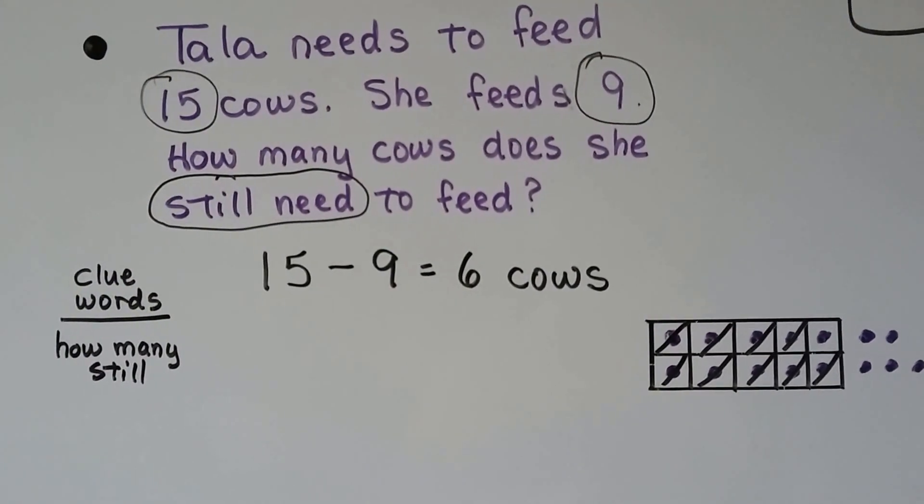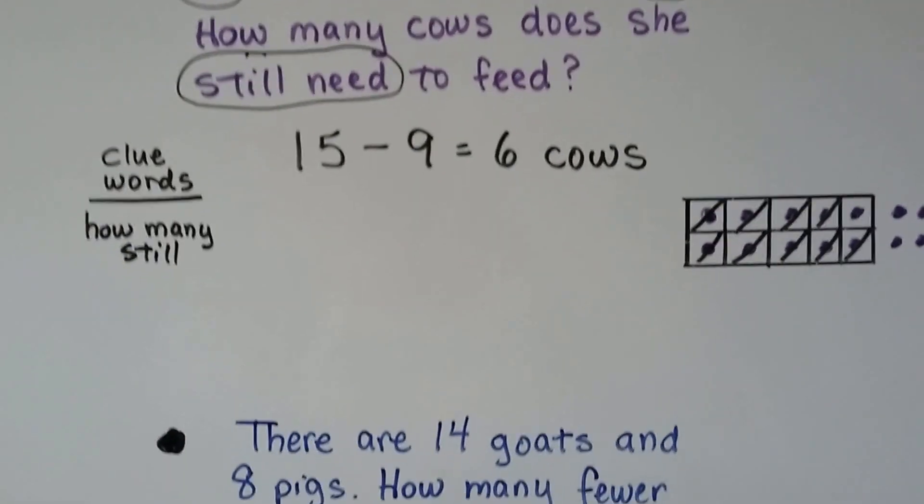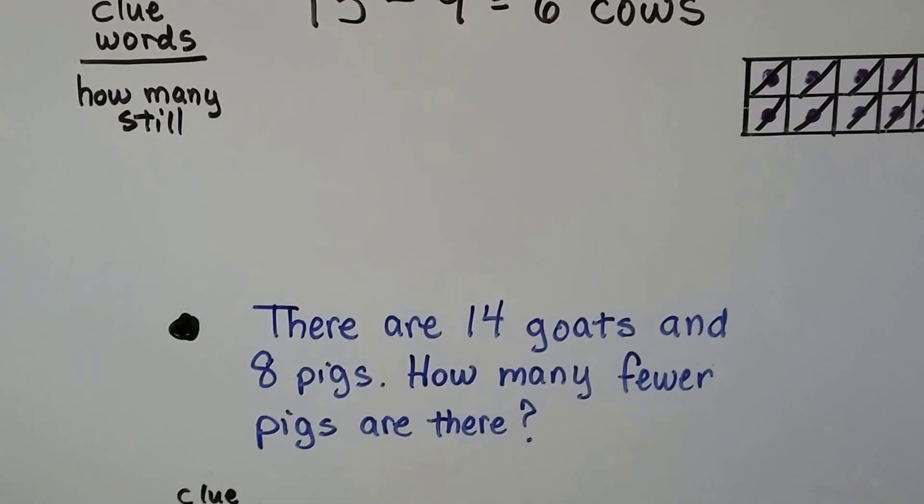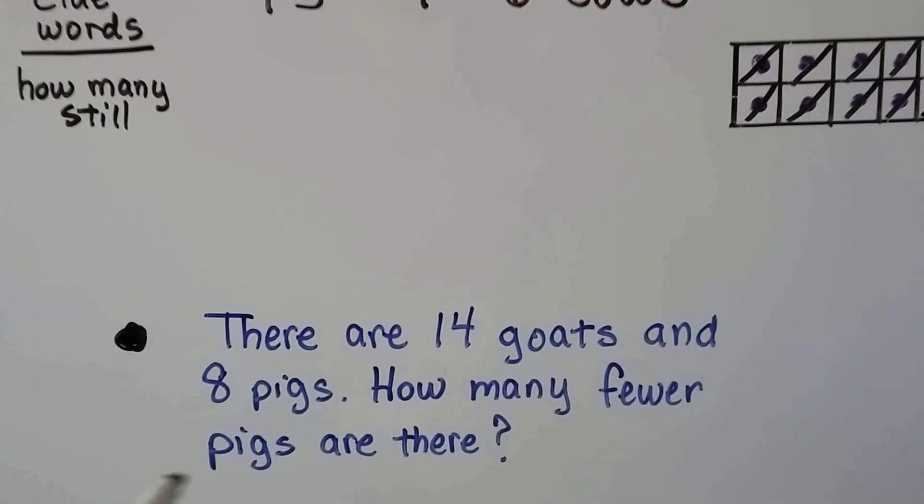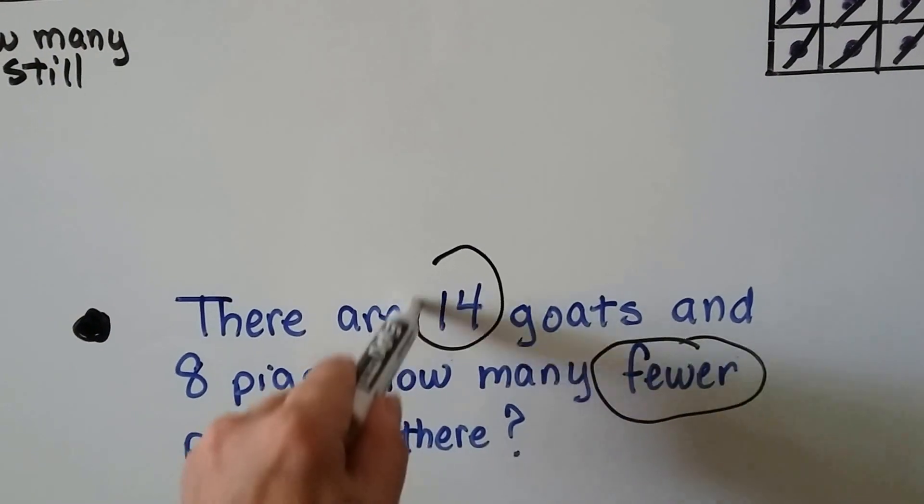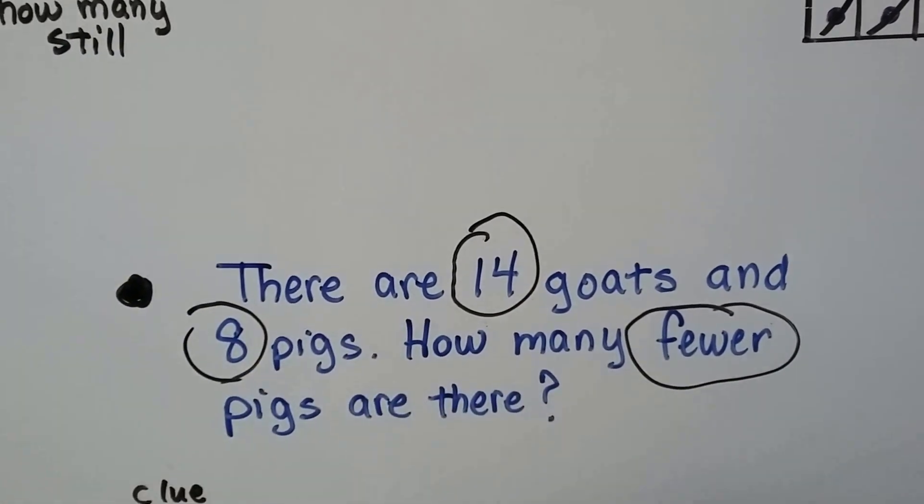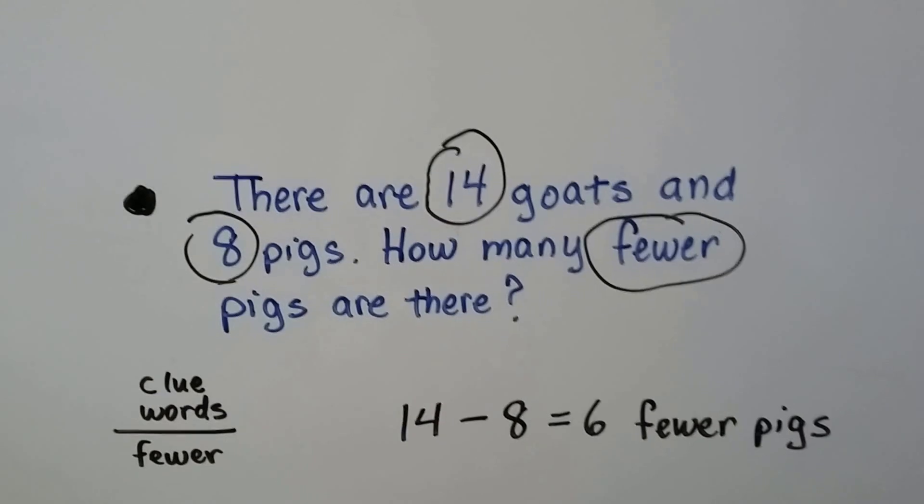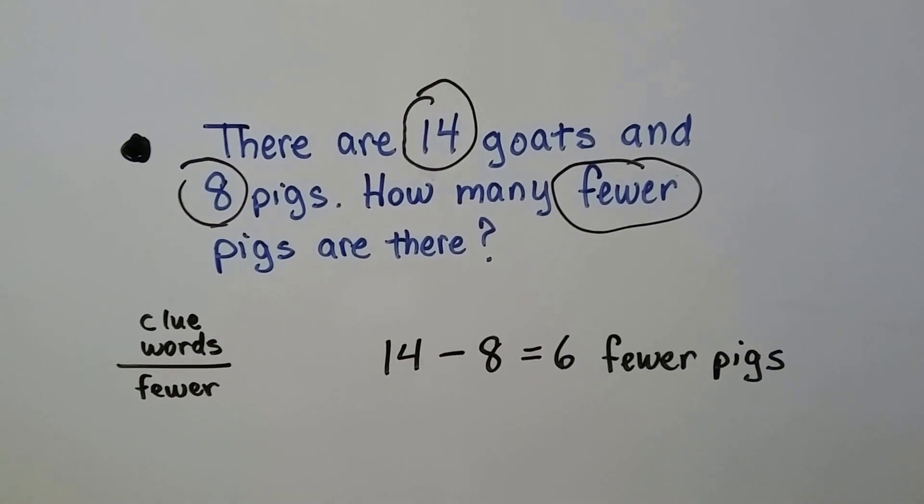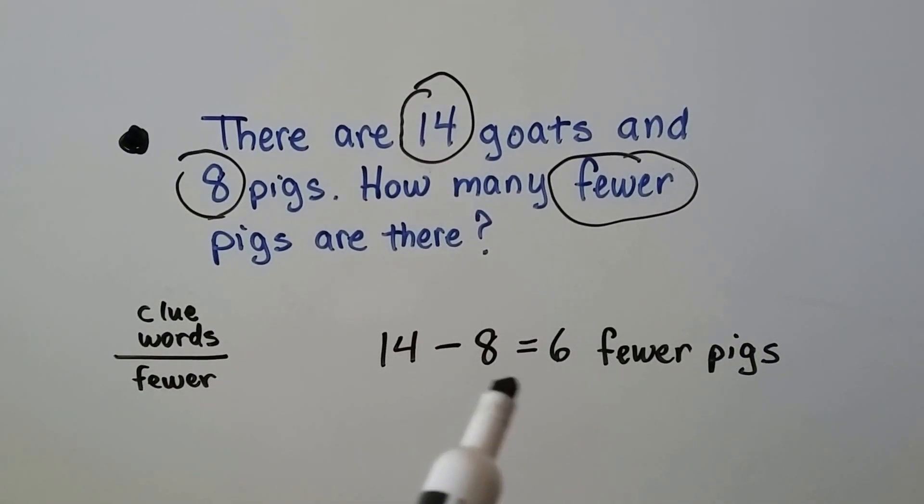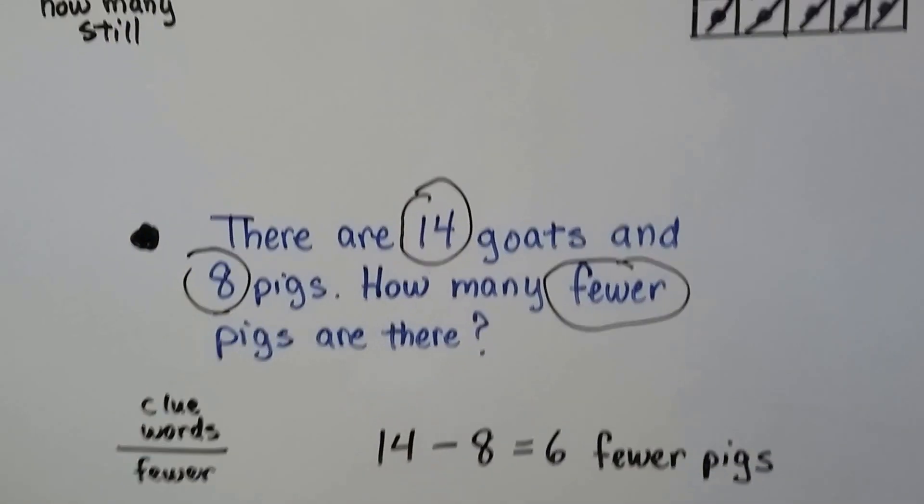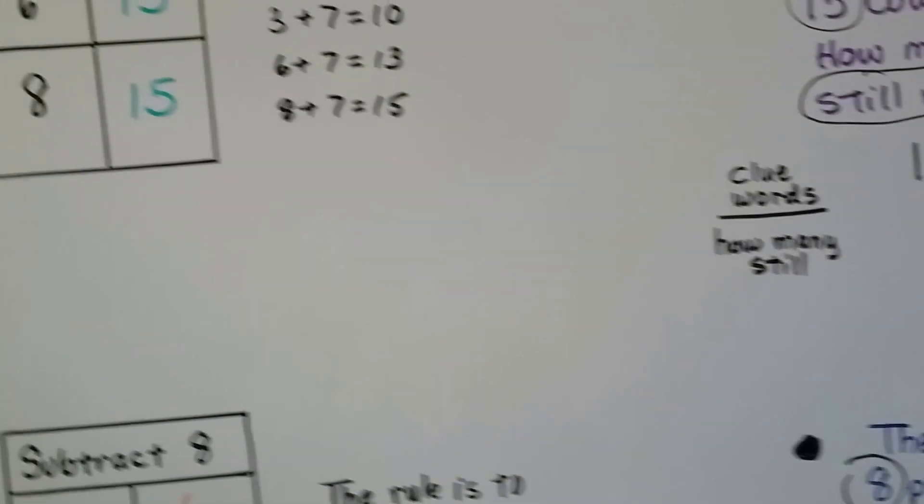Let's try this one. There are 14 goats and 8 pigs. How many fewer pigs are there? Our clue word is fewer. The important numbers are 14 and 8. Because it says fewer, we need to find 8 fewer than 14. So that's a subtraction sentence: 14 minus 8 equals 6. There's 6 fewer pigs than goats.